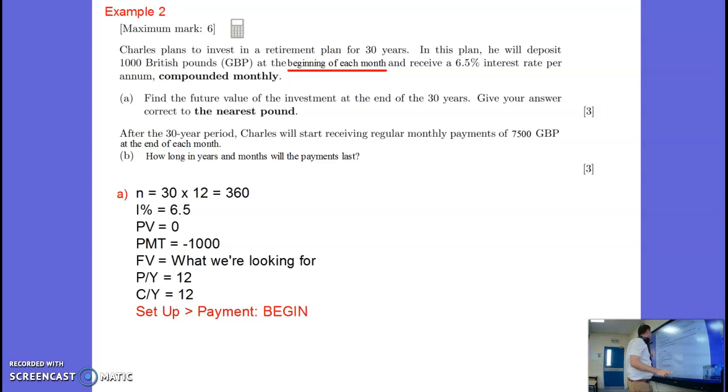So N is going to be, well, 30 years. Remember, it's in months, so 30 times 12. N is not the years. It is the number of periods. So it's 360. Then I percentage is 6.5.